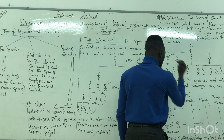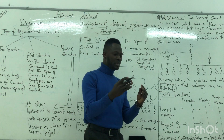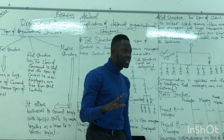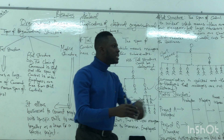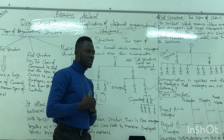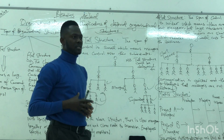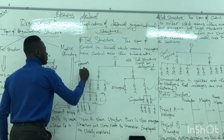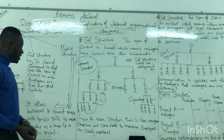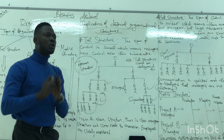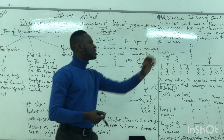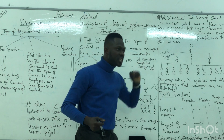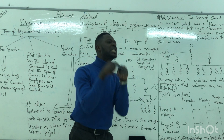The last type is the matrix structure. In the matrix structure, you are combining skills, expertise, or individuals to complete a project. The business has a project in hand, and you need those individuals that understand the project. So you form a team of expertise with a team leader. For example, if a project requires it, we need someone from finance, someone from human resources, someone from marketing, someone from production, and someone from logistics — and we put them together to complete the project.